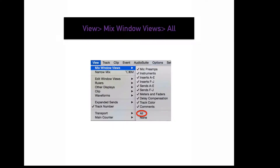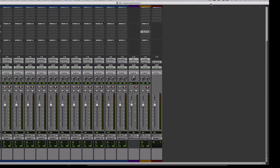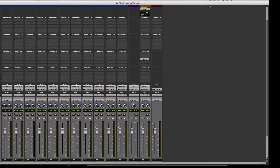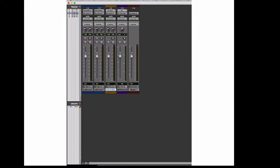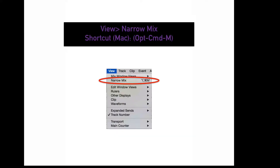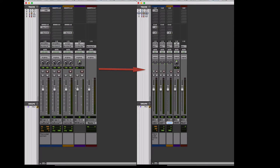To display all mix window view options, go to View, Mix Window Views, All. To display a predetermined minimum amount of information in your mix window, go to View, Mix Window Views, None — in this case, meters and track color. To decrease the width of each channel in the mix window, go to View, Narrow Mix, or press Option-Command-M. This is helpful if you want to see a large number of tracks without scrolling.